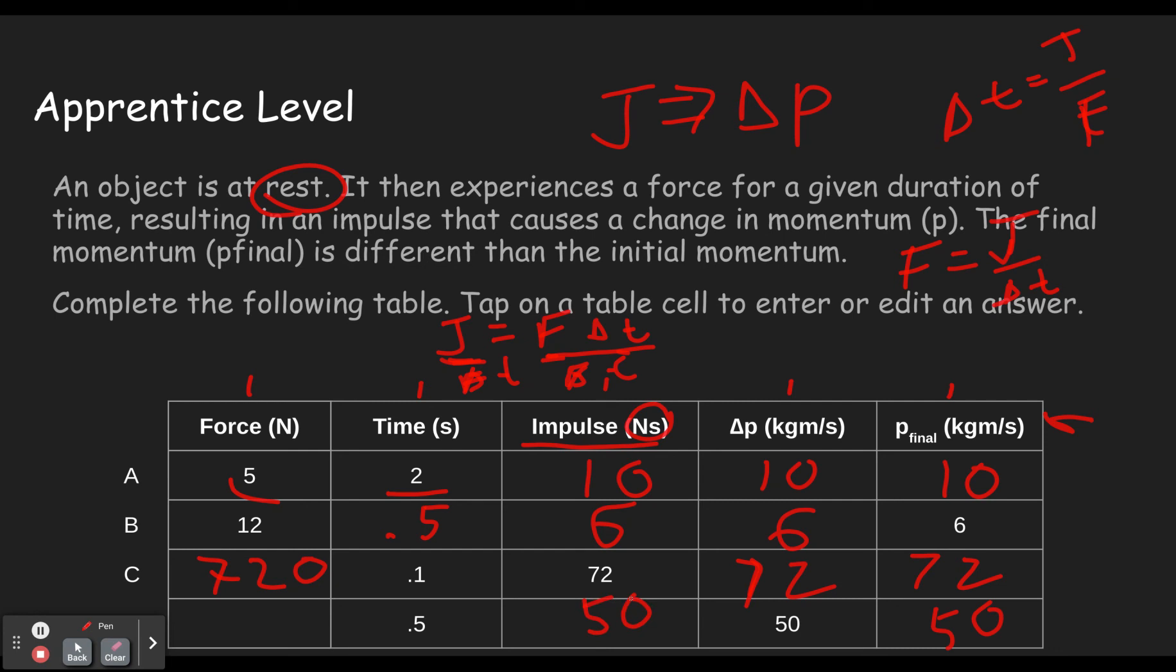And then our final one here, we see we have a change in momentum of 50. That means our final momentum will be 50. Our impulse will be 50. If we have a change in time, that means we're using this equation. So the force equals 50 divided by 0.5. That's going to be 100. After you do your division, you can always go back and check and make sure that the force times the time gives you the impulse. And that'll let you know you did the problem correctly.